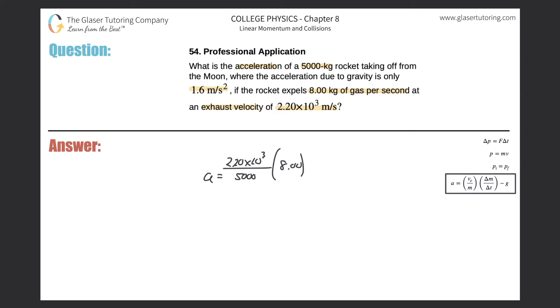Minus the gravitational acceleration. Since we're on the Moon, it's 1.6—do not plug in 9.8. Just plug it in: 2.2 times 10³ divided by 5000 times 8, minus 1.6.